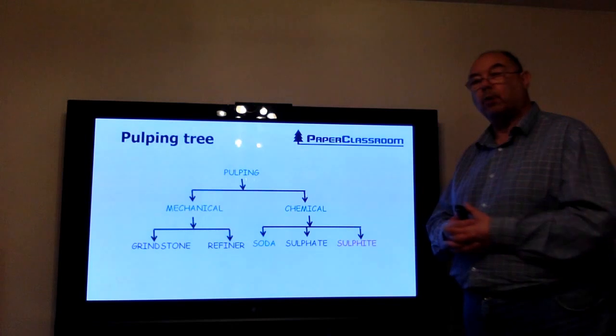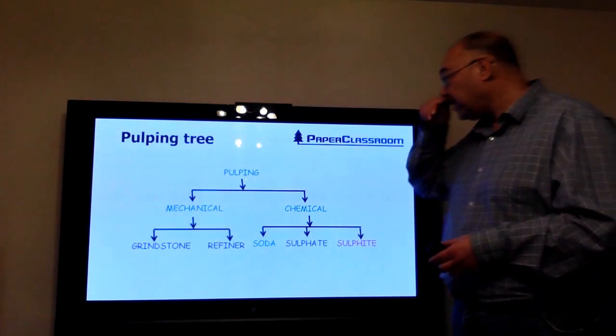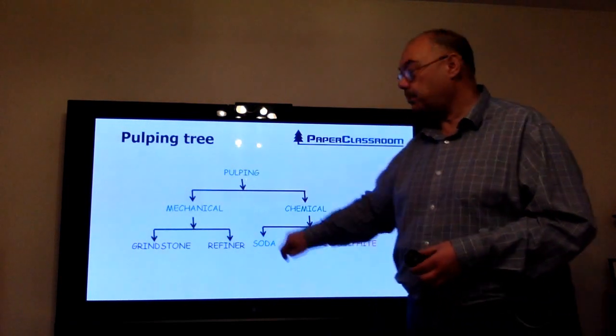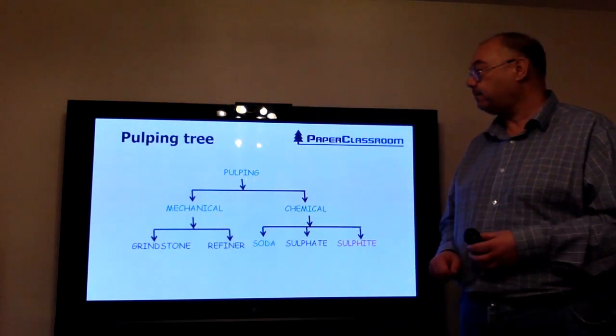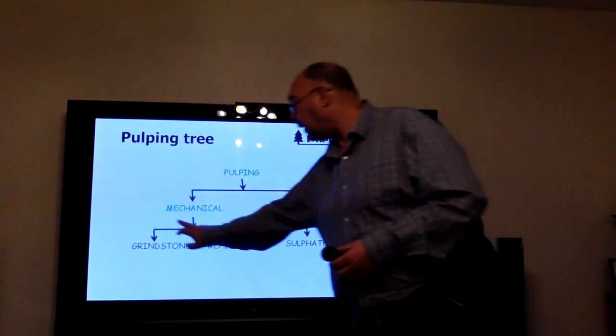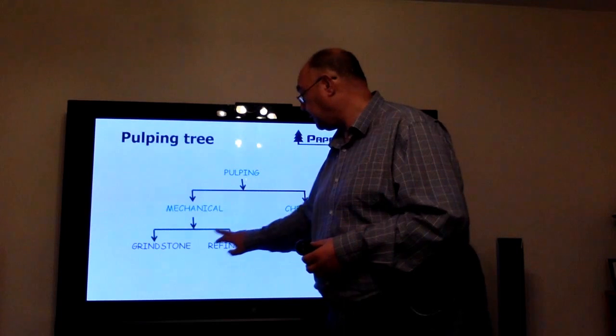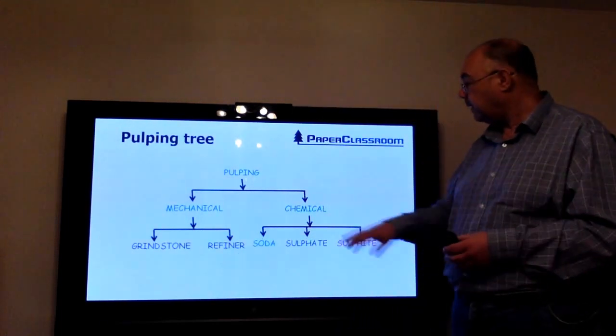Before we talk about pulping, I'll just give you a little reminder of my little pulping tree. So pulping: there are two types of pulping—we have mechanical pulping and we have chemical pulping. The original first pulping was mechanical. It was devised using the grindstone, and then later on they moved on to use the refiner for mechanical pulp.